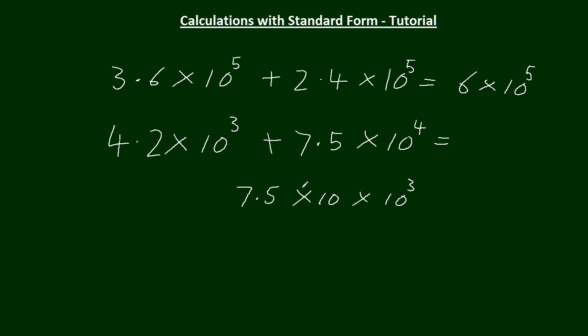So we can multiply this bit, 7.5 times 10, 75 times 10 to the 3. Now I can add on the 4.2 times 10 to the 3. It's going to stay as 10 to the 3, but this becomes 79.2 times 10 to the 3. And that will equal, changing it to standard form, we've got to move the decimal point this way, so that will be 7.92 times 10 to the 4.